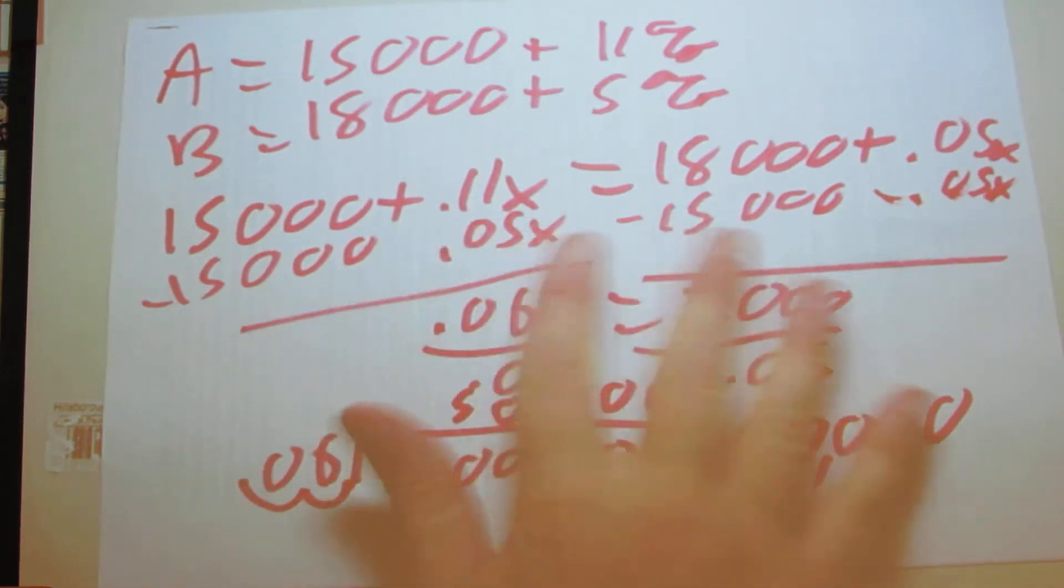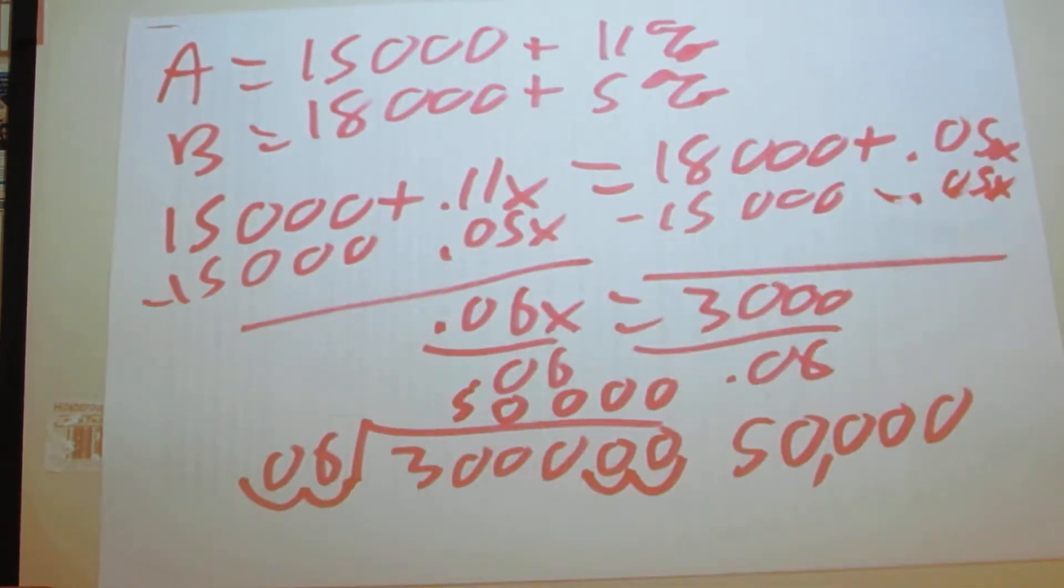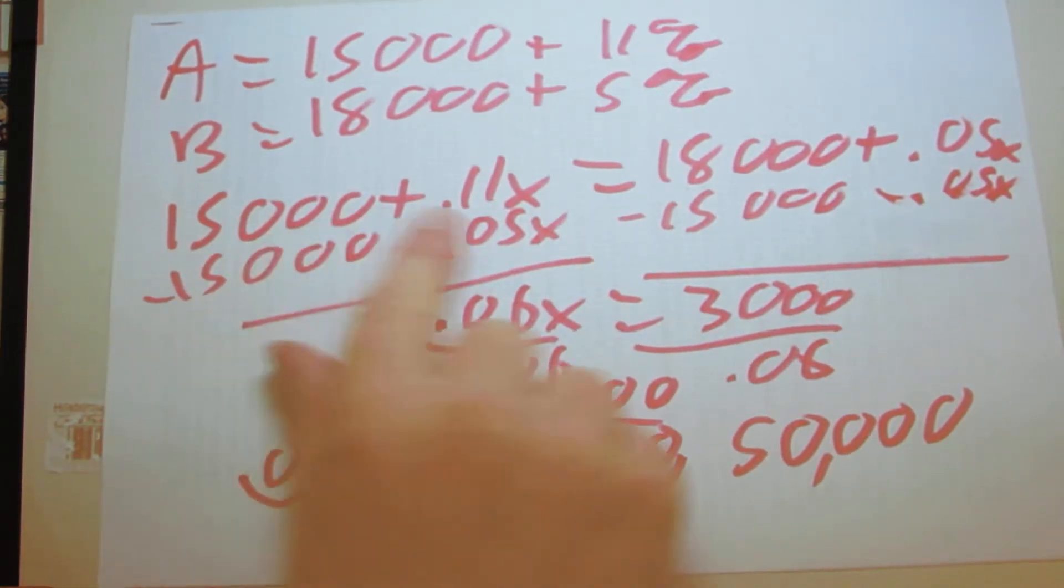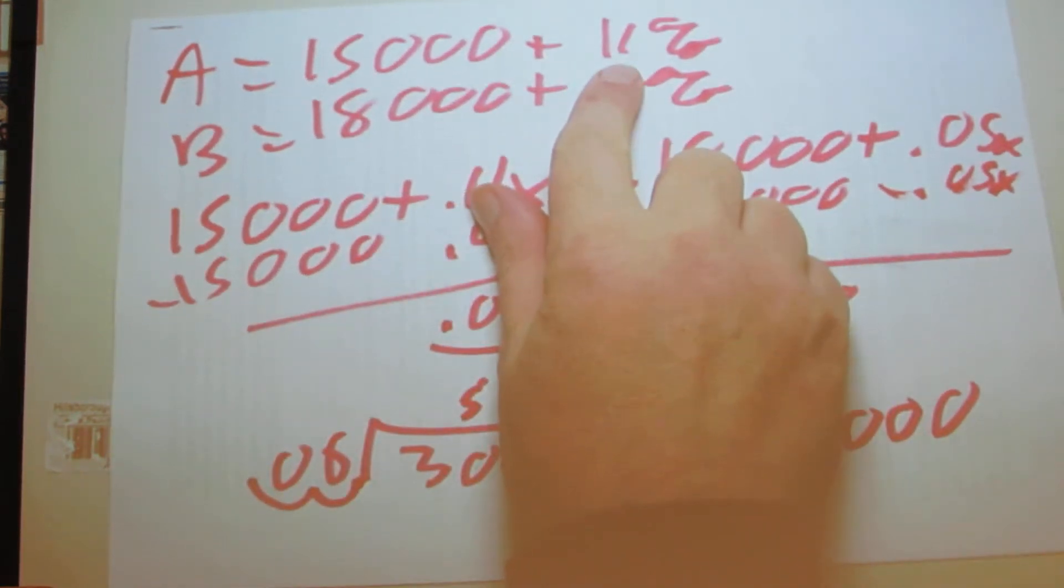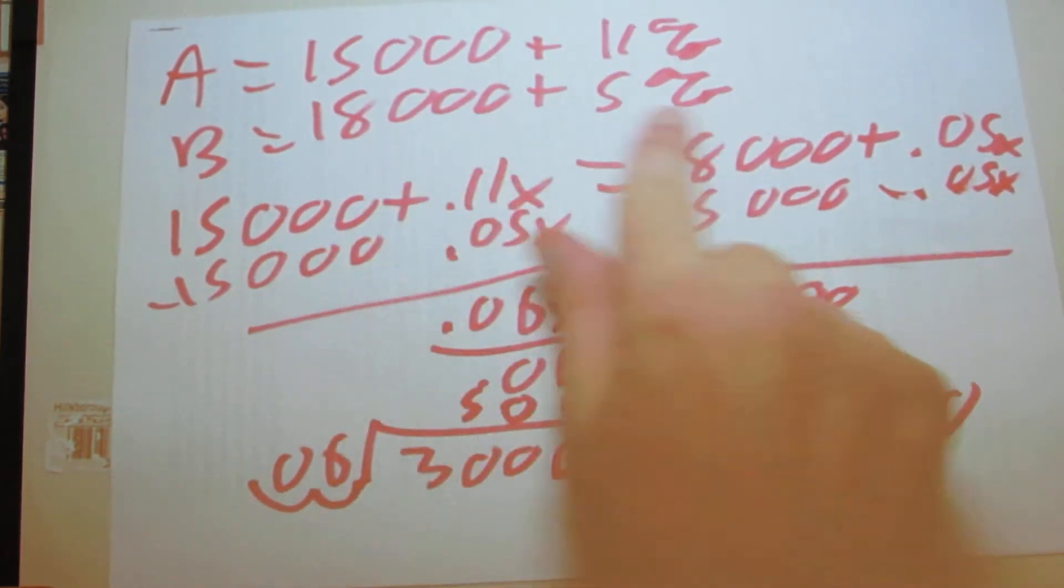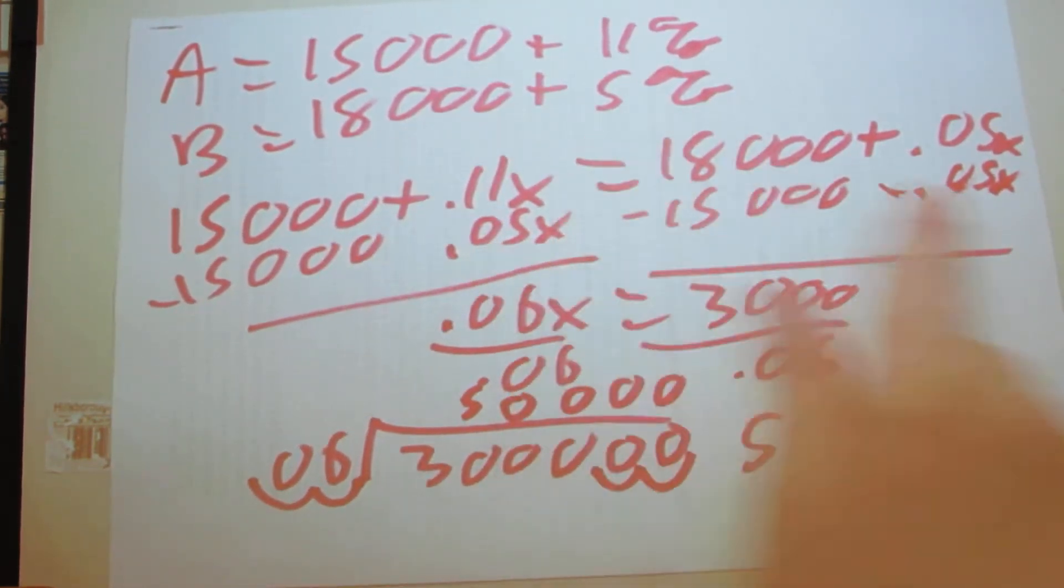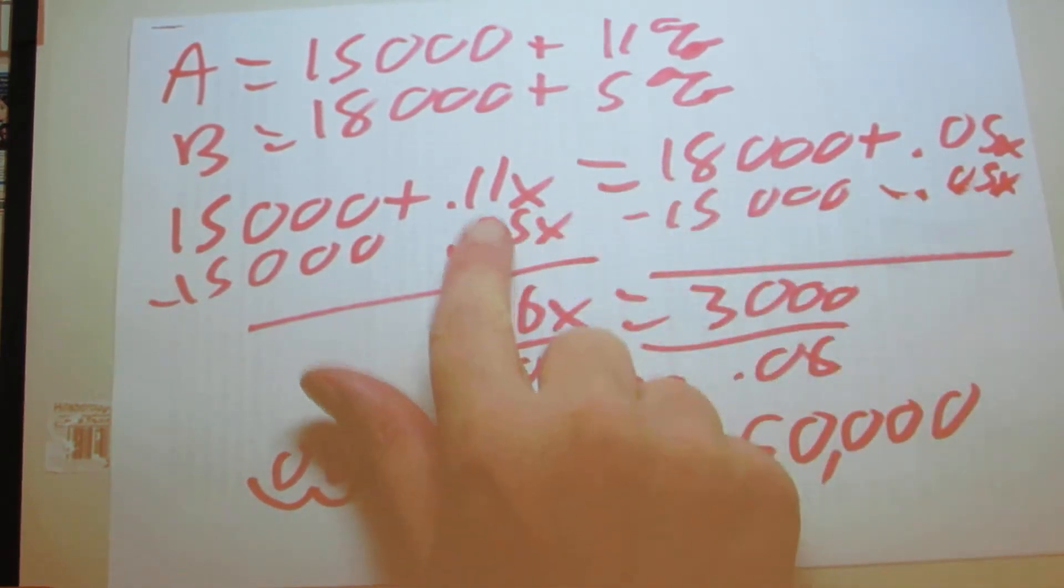So we just say 15,000 plus 0.11x, because remember we're just moving the decimal over two spots, equals 18,000 plus 0.05x. We're going to subtract the 0.05 because 0.11 is bigger than 0.05.